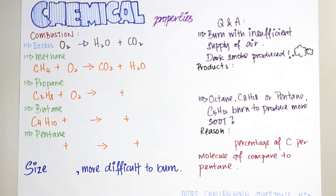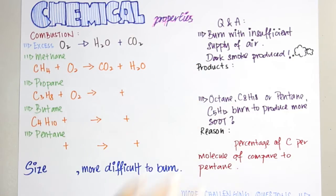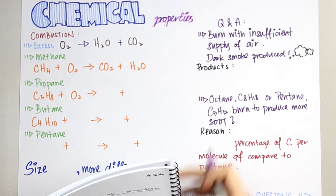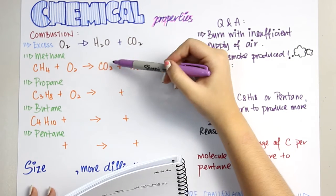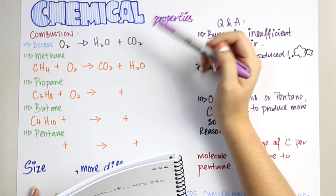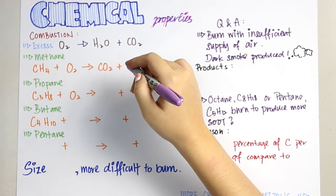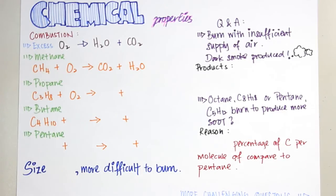Let's have some examples of alkane compounds. The first one is methane. The formula for methane is CH4. Do you still remember the general formula for alkane compounds? It is CnH2n+2. Methane with excess oxygen produces carbon dioxide and water only, but this is not a complete equation — you still have to balance it.